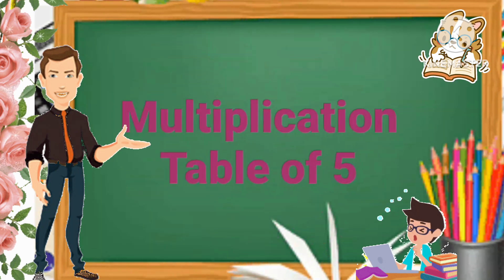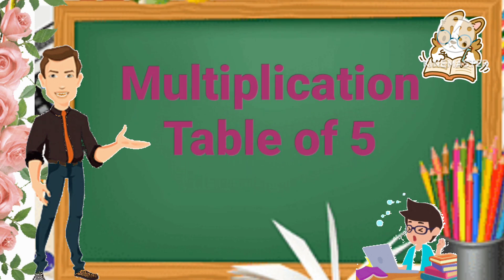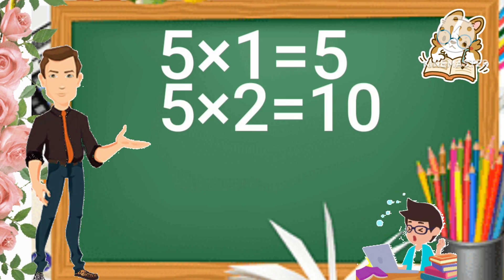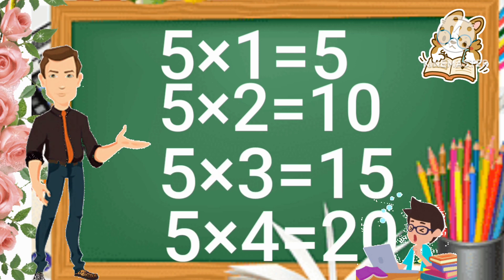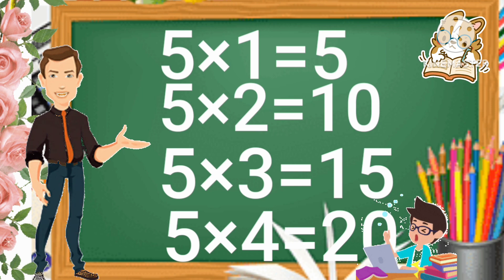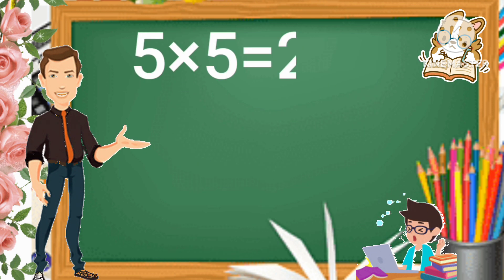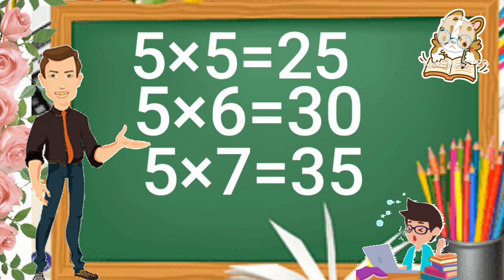Multiplication Table of 5. Next table, Table of 5. 5 times 1 is 5. 5 times 2 is 10. 5 times 3 is 15. 5 times 4 is 20. 5 times 5 is 25. 5 times 6 is 30. 5 times 7 is 35.